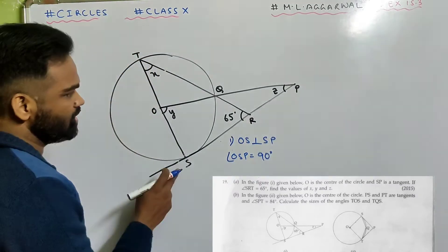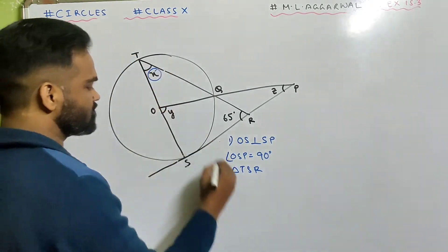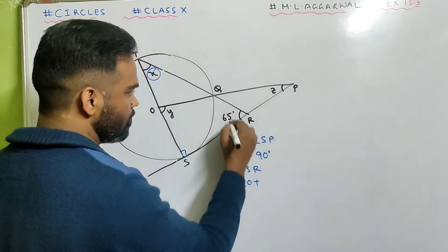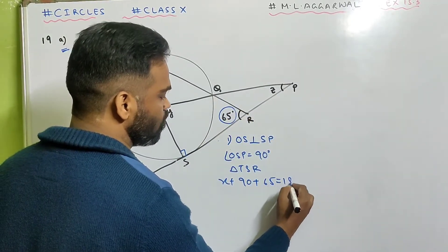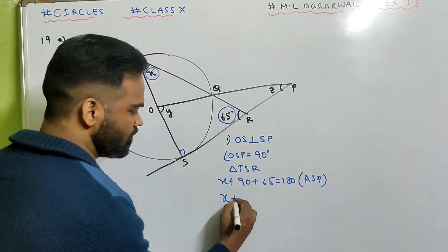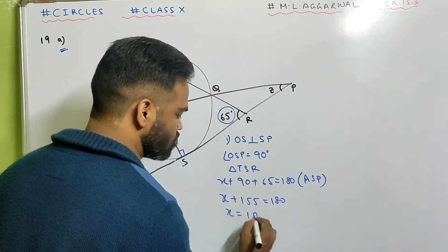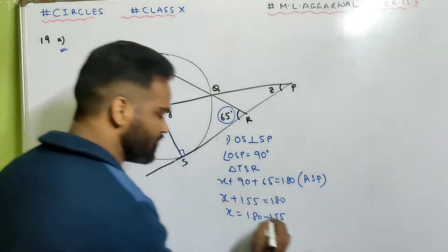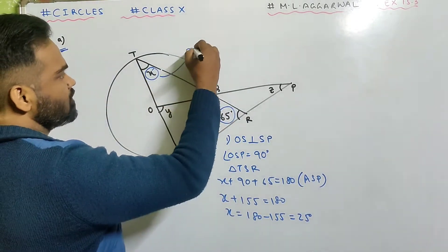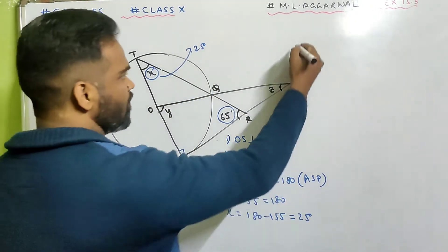Now look at triangle TSR. Using the angle sum property: X plus 90 plus 65 equals 180. Solving, X plus 155 equals 180, so X equals 25 degrees. First part is done.